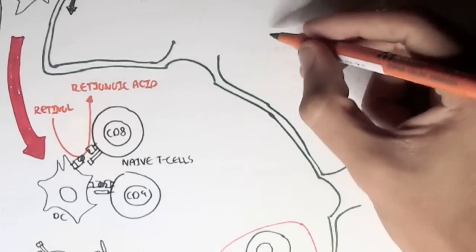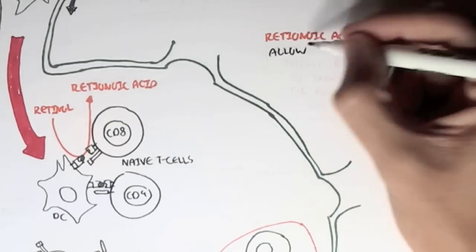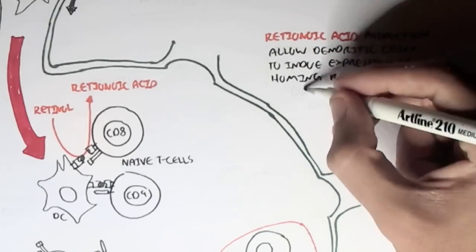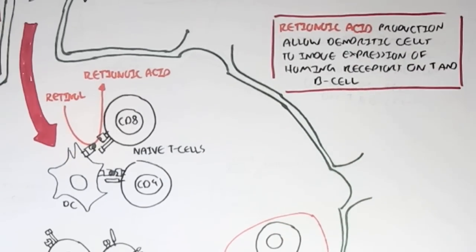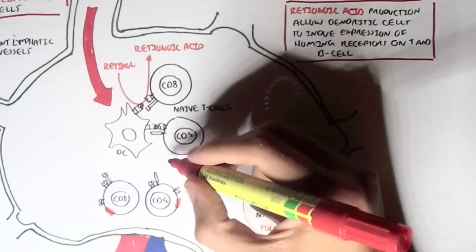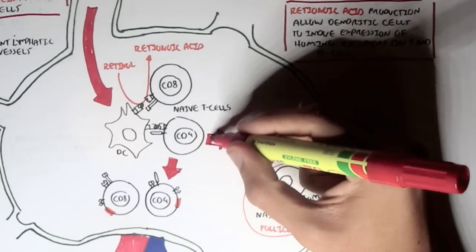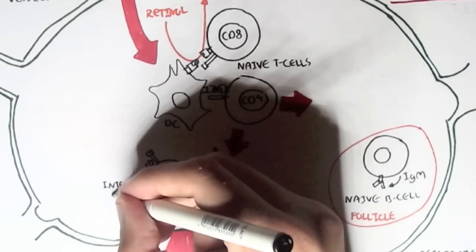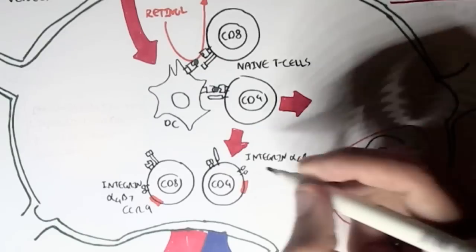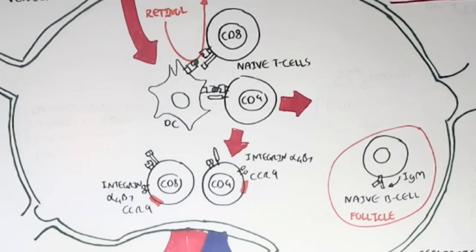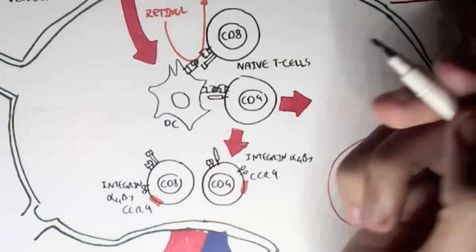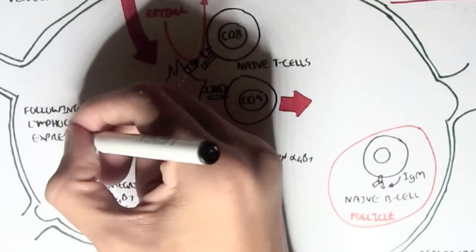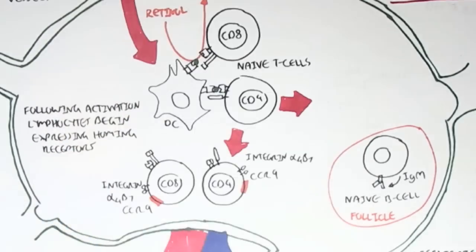Retinoic acid production allows dendritic cells to induce expression of homing receptors on these lymphocytes. Homing receptors tell where these lymphocytes have to go. The lymphocytes express homing receptors integrin alpha 4 beta 7 and also CCR9. The integrin can also be different depending on which location they have to go, but typically it is integrin alpha 4 beta 7 and CCR9, expressed following lymphocyte activation by dendritic cells or antigen presenting cells.